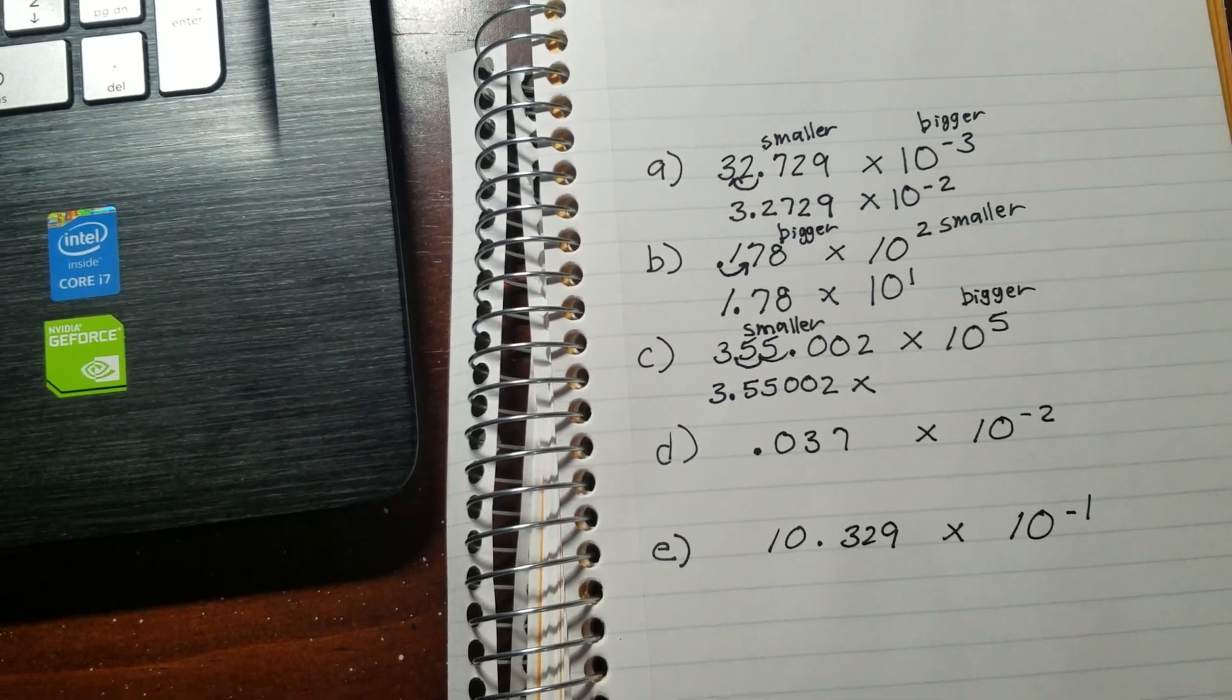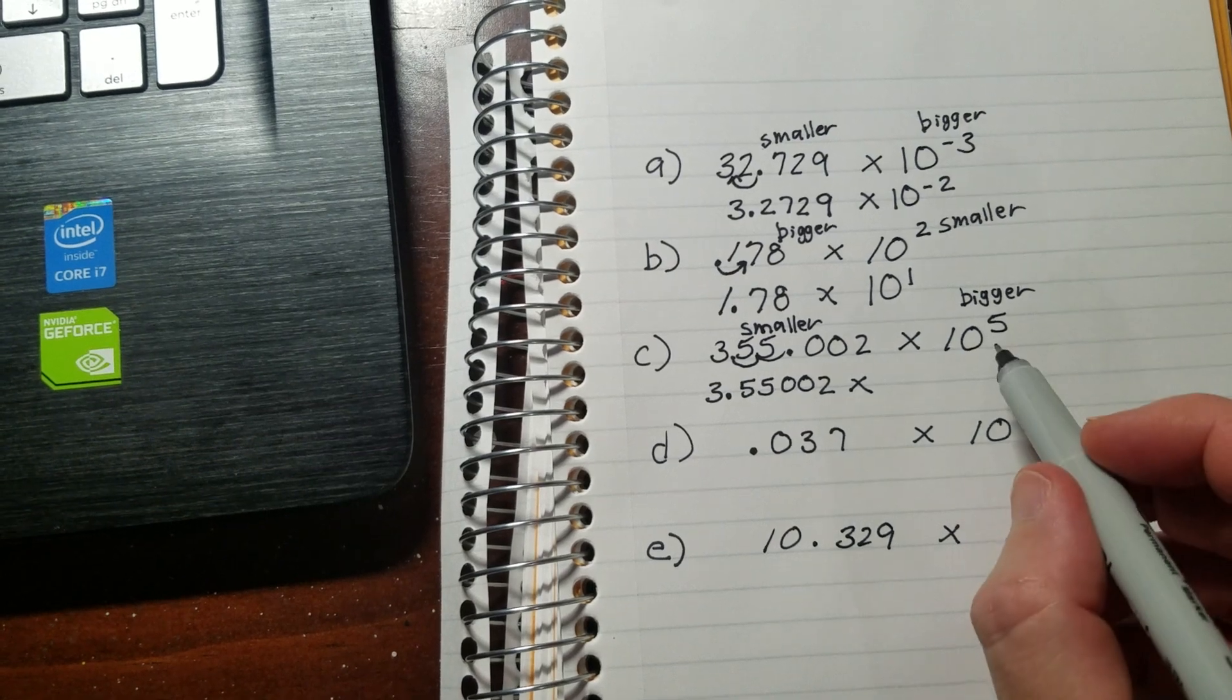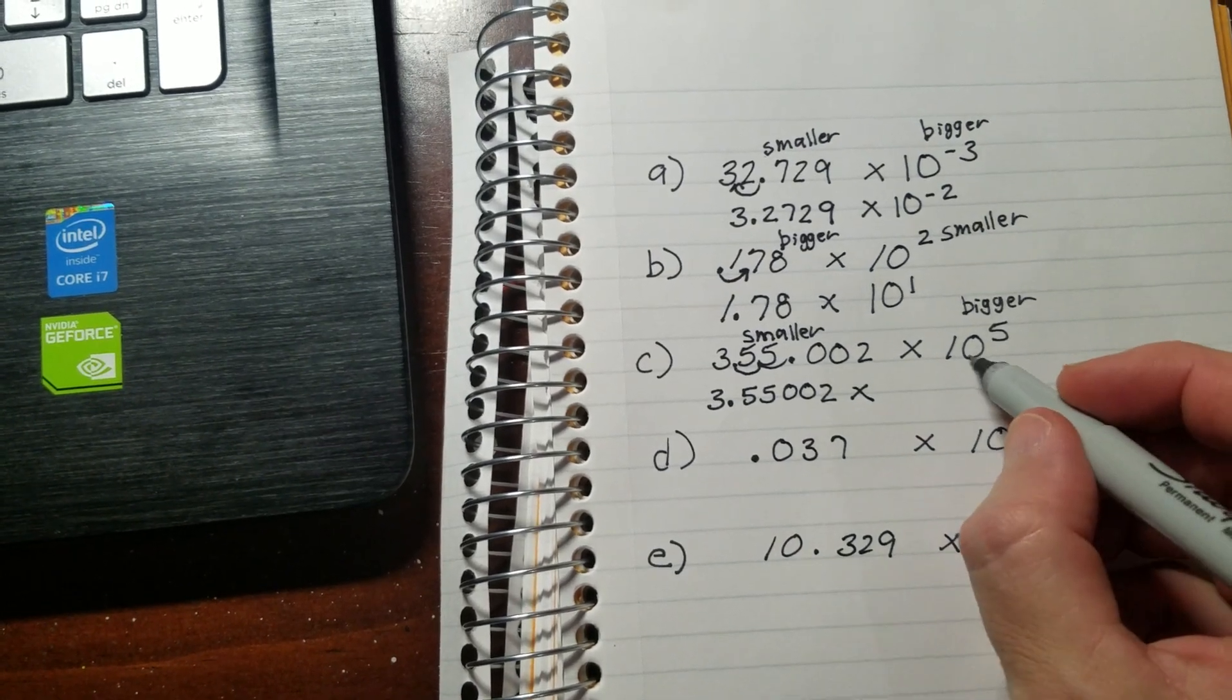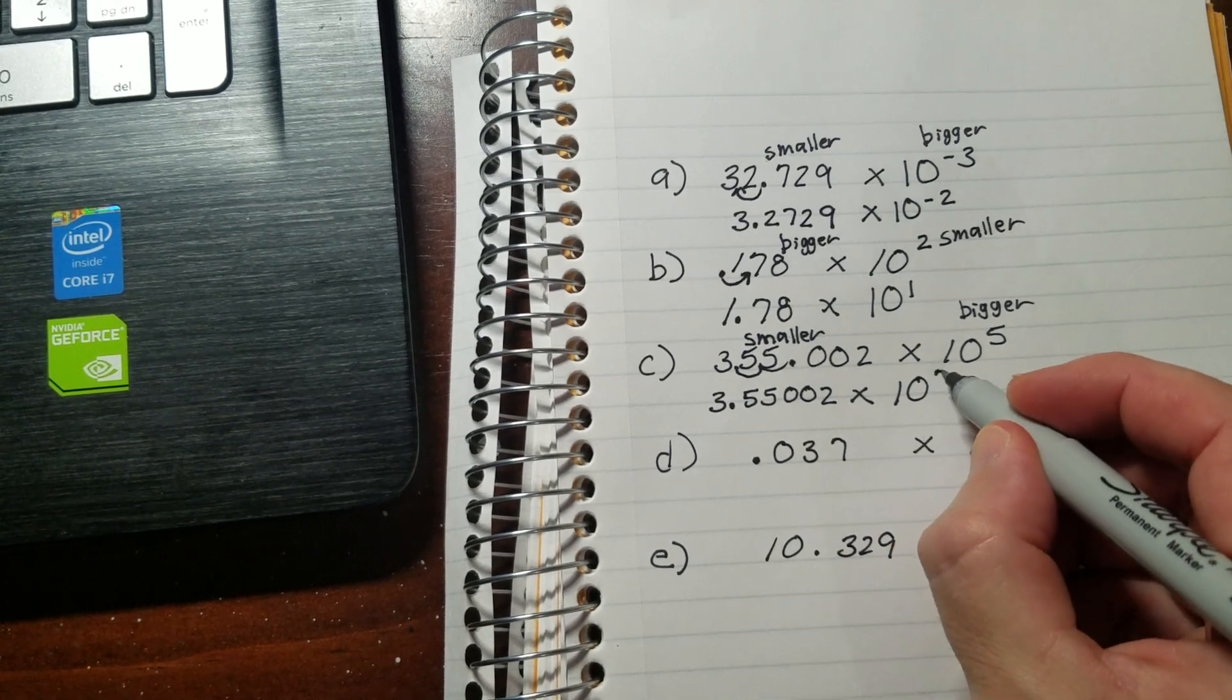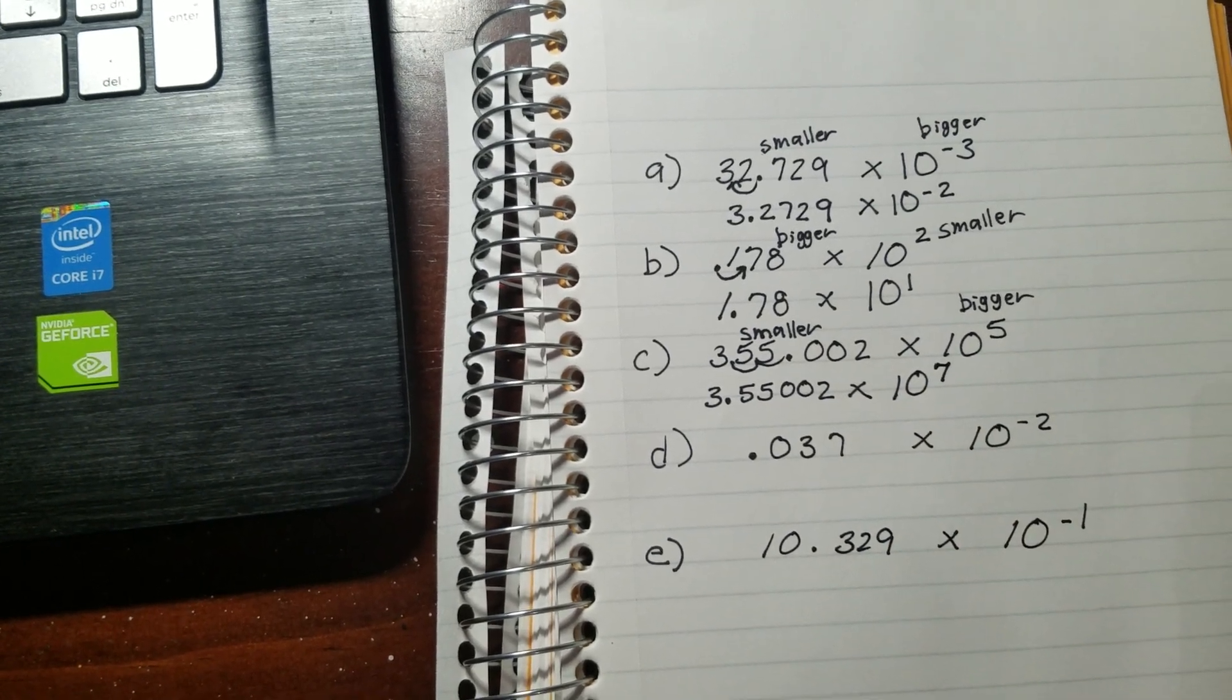Except compared to the previous two that I did, this is going to actually have to become bigger by 2. So I moved the decimal twice over here, so I'll move this up 2 to be to the power of 7.